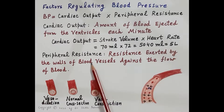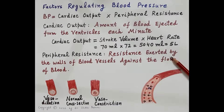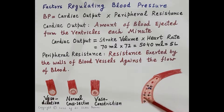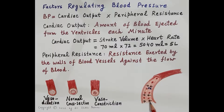The other factor on which blood pressure depends is peripheral resistance. Peripheral resistance is the resistance exerted by the walls of blood vessels against the flow of blood. As shown in the diagram of a blood vessel, the resistance exerted by the vessel walls against blood flow is termed peripheral resistance. Peripheral resistance depends upon the cross-section of the arteries or blood vessels.